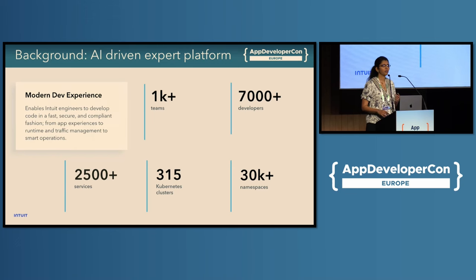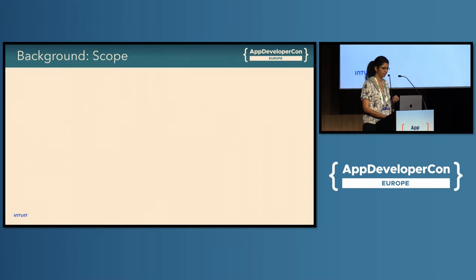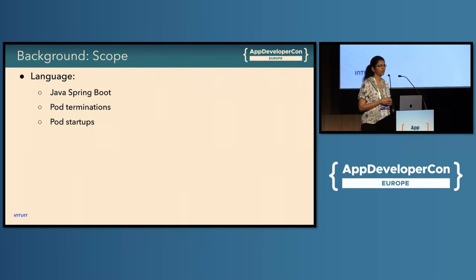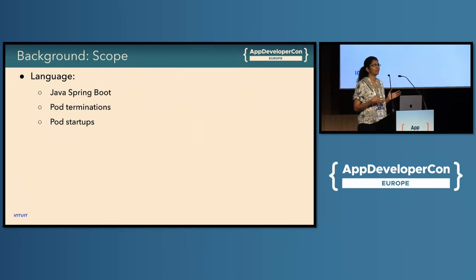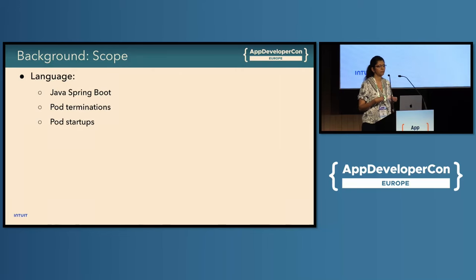Todd and I are part of the Kubernetes platform team that manages this infrastructure. Our application developers primarily focus on Java Spring Boot, and so in this talk we will cover a lot of Spring Boot-specific details, including what we do during pod startups and termination. That said, this is not specific to Java Spring Boot alone — some of the best practices can be applied to other languages like Golang or Python as well.